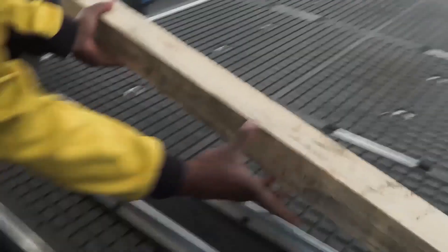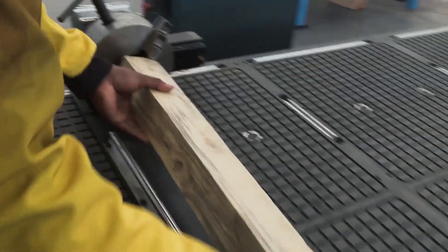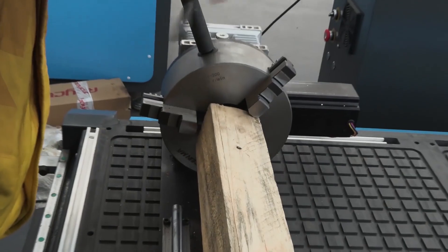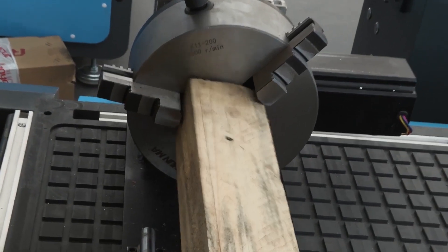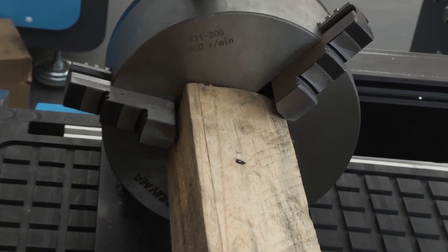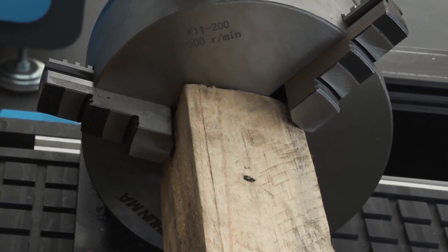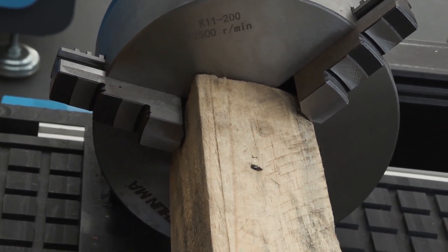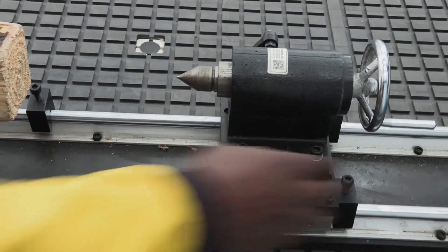Now, place one end of the material into the chuck jaw and tighten. On the other end, move the locking pin into position.